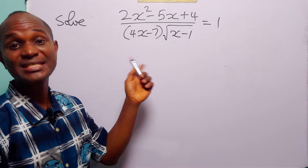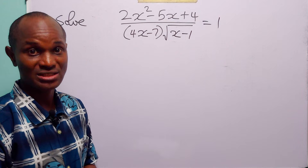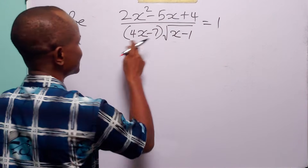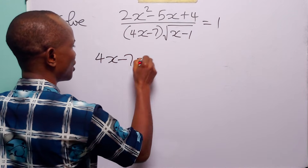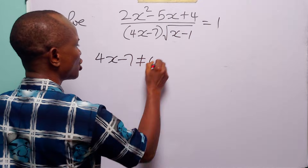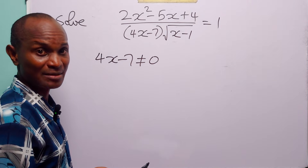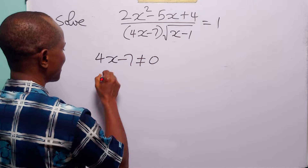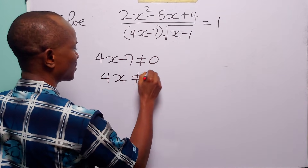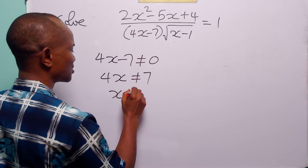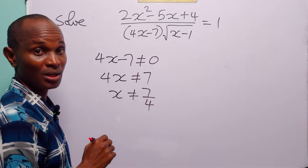For this equation to be defined, two conditions must be met. The first one is that 4x minus 7 must not be equal to 0, because we cannot divide by 0. So from here, we have that 4x must not be equal to 7, and x must not be equal to 7 over 4.